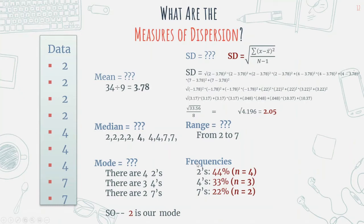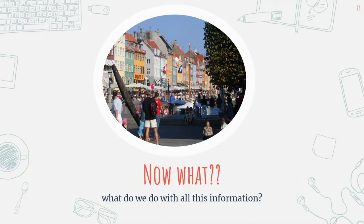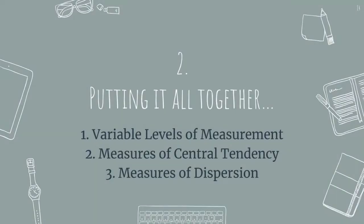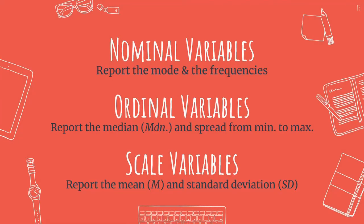Now let's put it all together. We understand differences in variable levels of measurement, measures of central tendency, and measures of dispersion — but how do we determine what to report? For nominal variables, report the mode and frequencies. For ordinal variables, report the median and the spread from minimum to maximum. For scale variables, report the mean and the standard deviation.